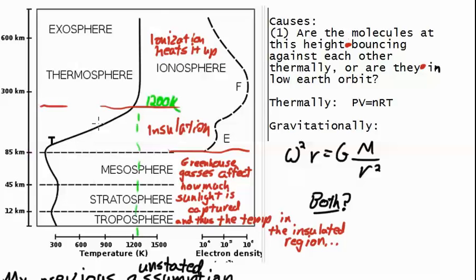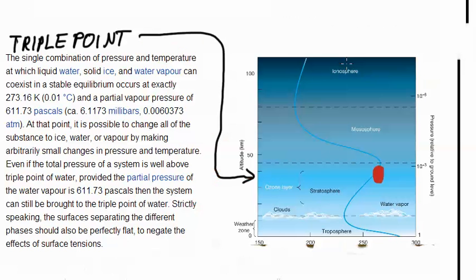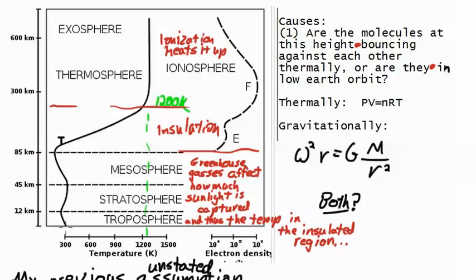The greenhouse gases in this area affect how much sunlight is captured in this area, and so it would affect the temperature inside this insulated region where we live down here in the very lowest part of the troposphere. So if this insulation barrier were to fail somehow, then this would just be 1200 Kelvin straight down, which is way higher than the approximately 300 Kelvin where it is down here.